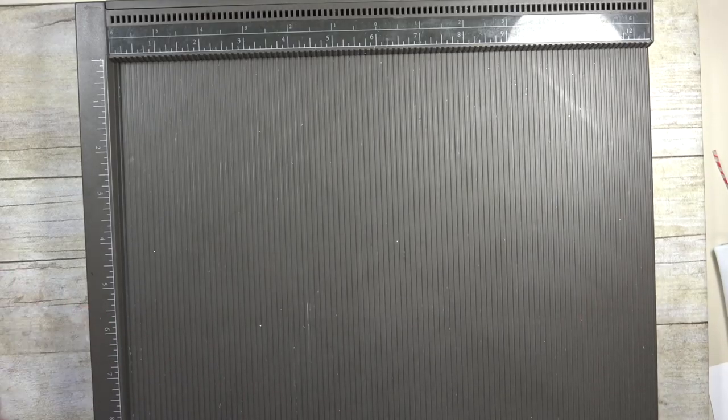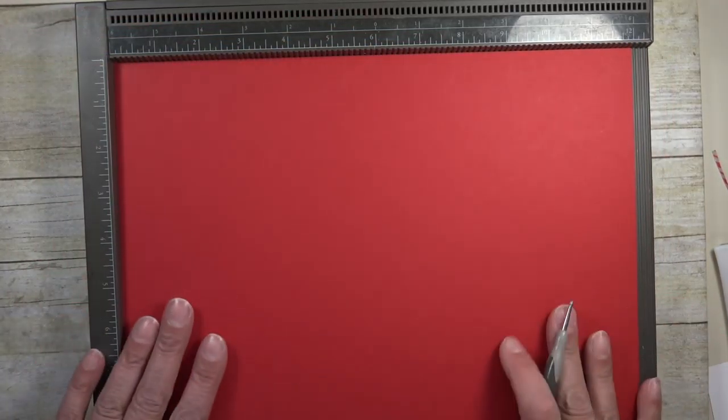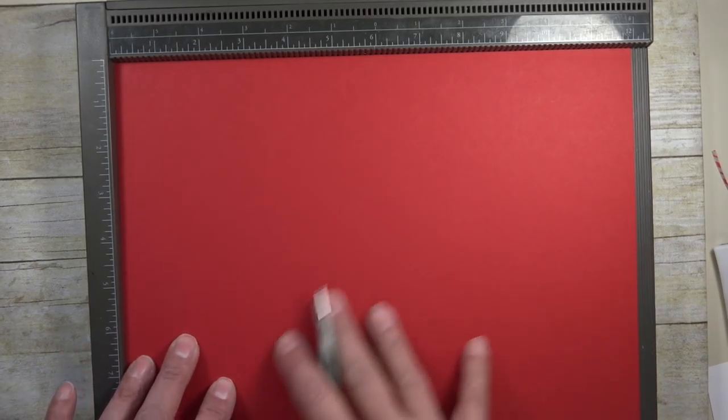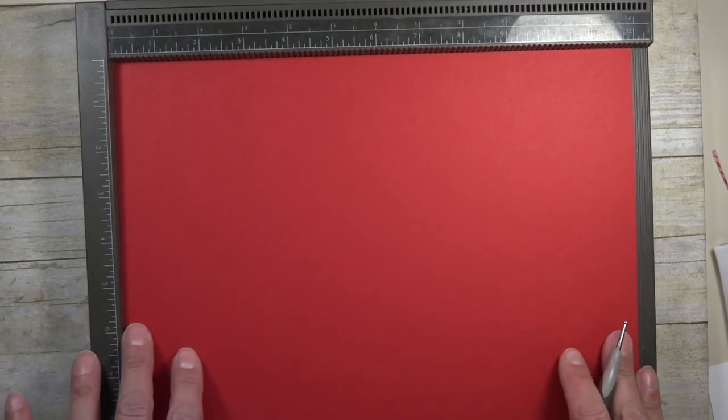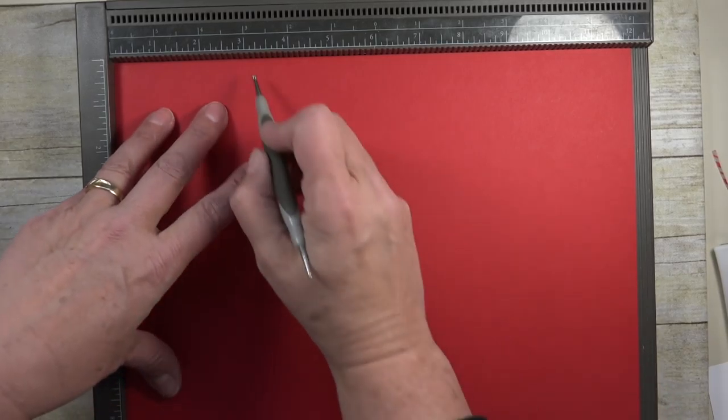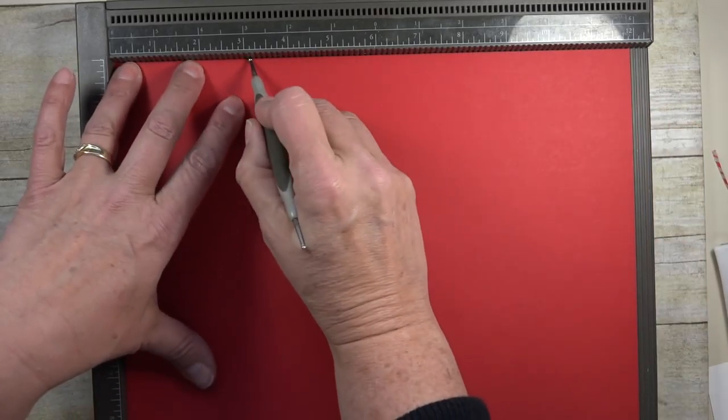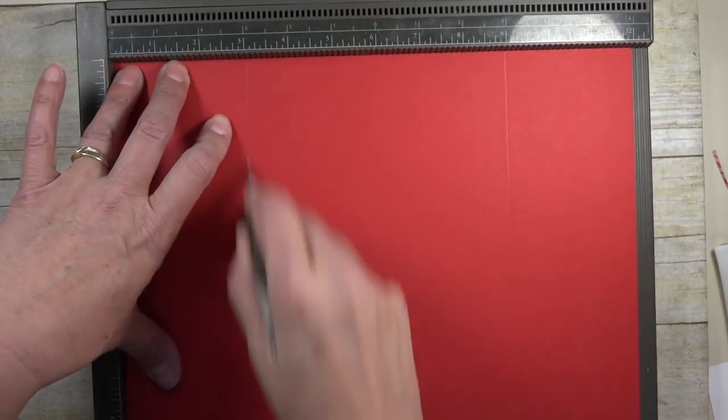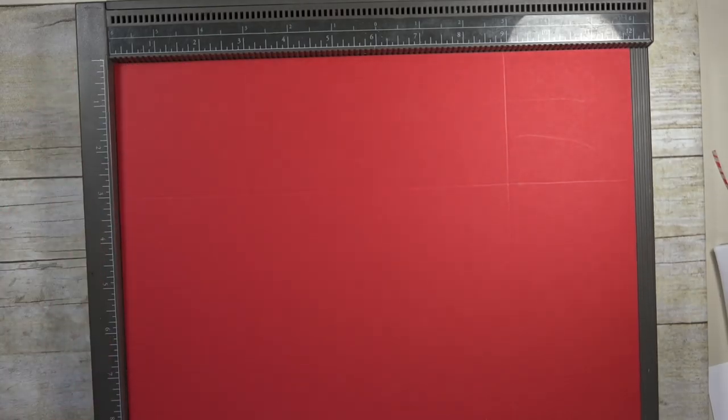I'm going to set that piece of paper aside and come in with a twelve by twelve piece of real red cardstock. In our holiday catalog, we have packs of twelve by twelve cardstock in a single color. This is real red and it's just great to do lots of different projects. I'm scoring this piece of cardstock at three inches, and once I get these all scored, I'm going to cut them.